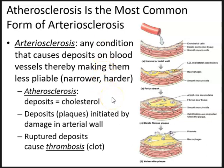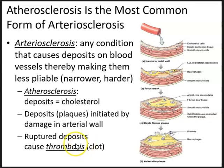Atherosclerosis involves the formation of an atheroma — basically a deposit or plaque initiated by damage in the arterial wall. These plaques deposit upon the damaged sites, and enough accumulation can occur where the deposits can rupture and cause a thrombosis, or clot.